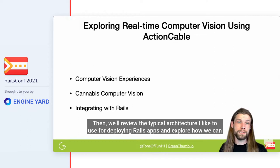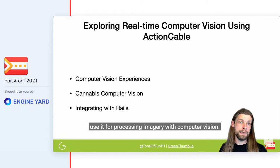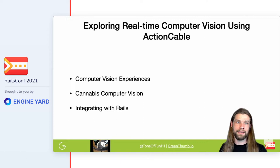Then we'll review the typical architecture I like to use for deploying Rails apps and explore how we can use it for processing imagery with computer vision. This is a cat — she is a cute cat. We'll just put her down here. Moving along.